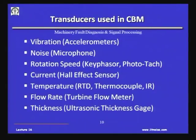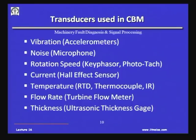With this background on instrumentation, we will now be specific and discuss particular transducers in the subsequent classes. The mechanical parameters to be covered are vibration, noise, rotational speed, current, temperature, flow rate, and thickness. The corresponding transducers conventionally used are accelerometers, microphones, key phasors, photo tachs, RTDs, flow meters, and ultrasonic thickness kits. The principles behind these instruments will be discussed in the subsequent classes. Thank you.